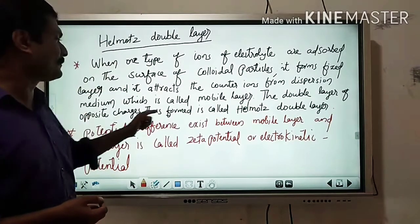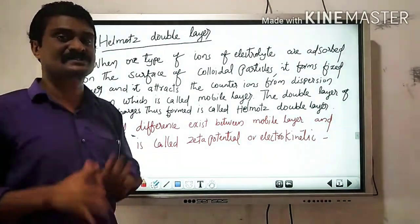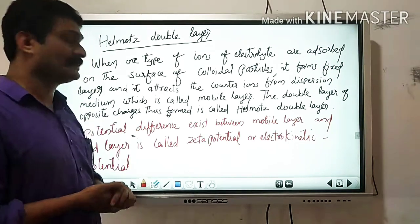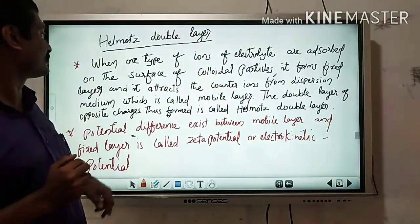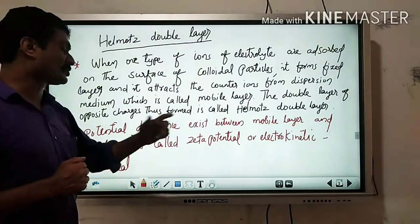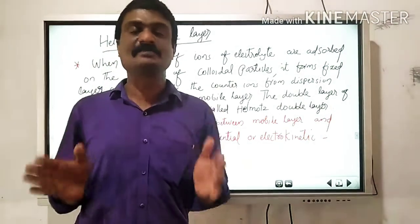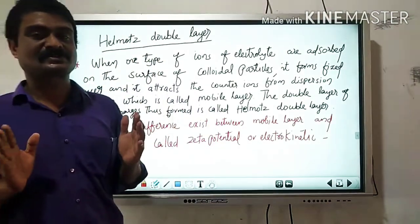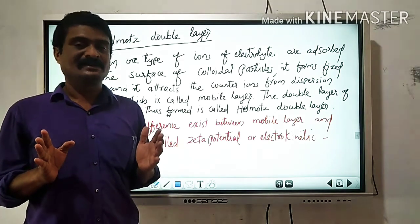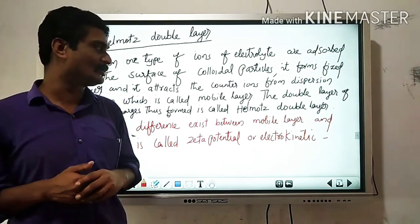The double layer of opposite charges thus formed is called the Helmholtz double layer. These two layers are called the Helmholtz double layer. A potential difference exists between the mobile layer and the fixed layer. This potential difference is called the zeta potential or electrokinetic potential.